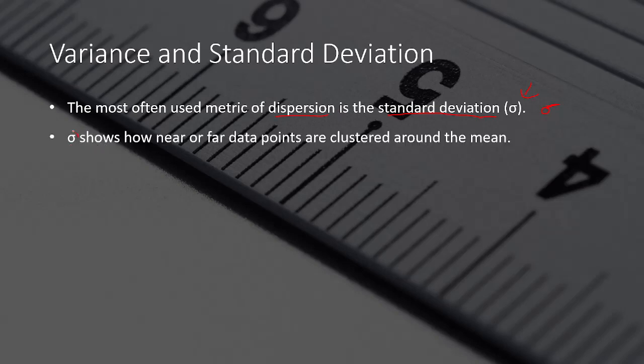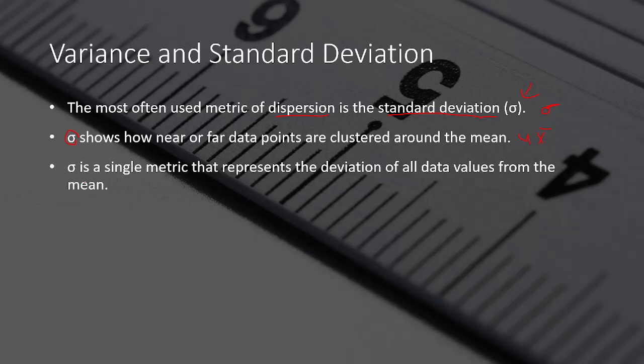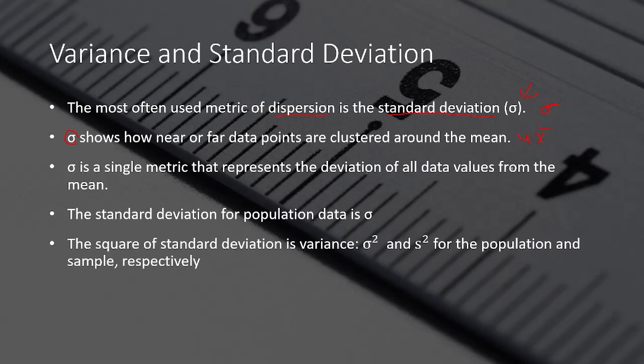So the standard deviation, right here, shows how near or far data points are clustered around the mean. Remember how the mean looks like, like this, sample mean and population mean? So standard deviation shows how near standard deviation is to these two. Standard deviation is a single metric that represents the deviation of all data values from the mean. The standard deviation for population data is standard deviation or sigma. The square of the standard deviation is the variance, and the sample squared for the population and the sample respectively.